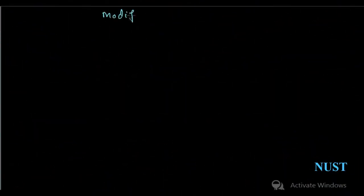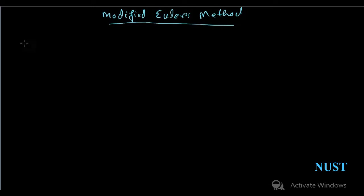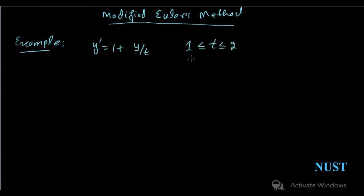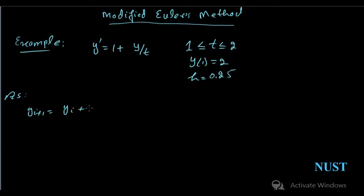Hello, welcome to Maths and Tracks. Today's topic is the modified or improved Euler's method. Let's consider the same example as we did previously in the midpoint method. The function range is from 1 to 2, the initial value is 2, and the step size is 0.24. Here is the expression for the improved Euler's method.